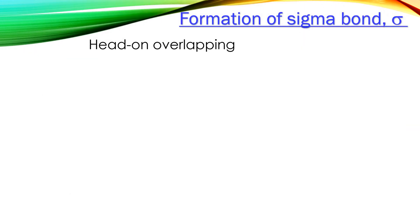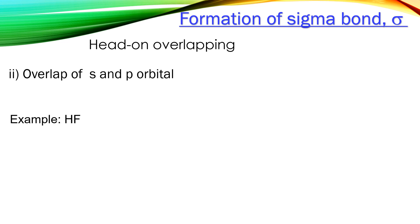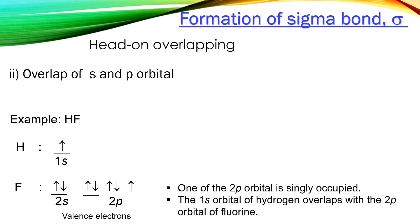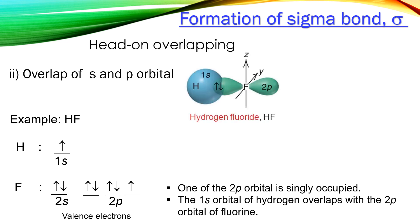The second head-on overlapping is between s-orbitals and p-orbitals. For example, in the formation of hydrogen fluoride. One of the 2p orbitals of the fluorine atom is singly occupied with an electron. Therefore, the 1s orbital of the hydrogen atom will overlap with the 2p orbital of the fluorine atom. As a result of the overlapping, the electrons become paired and a covalent bond is formed.